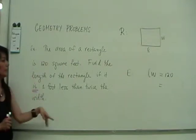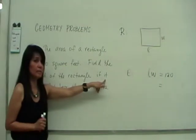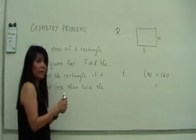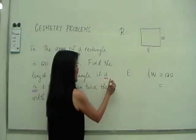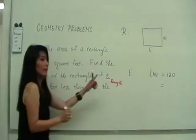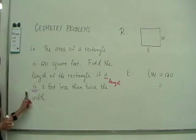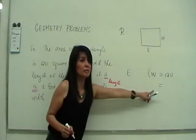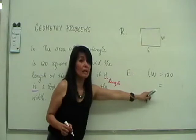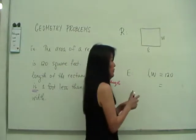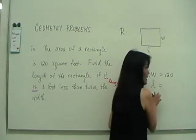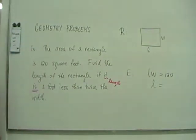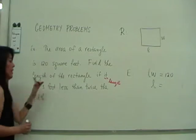Read the problem. Who is going to be on the left of the equal sign? Find the length of the rectangle if it, who's it? It is. It is the length, right? It, meaning the length. The length is. So who's going to sit on the left of the equal sign? Which letter? L. If it, the length, is.